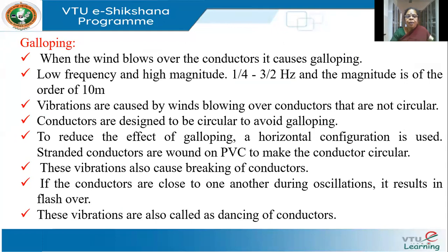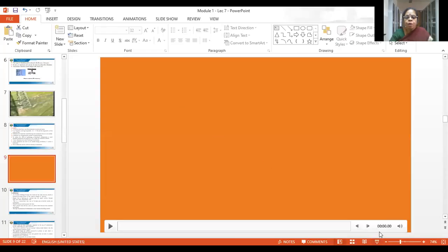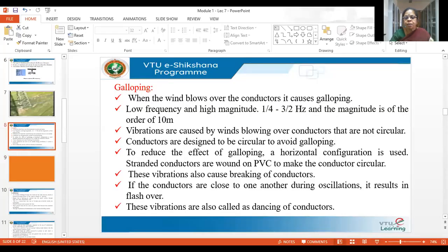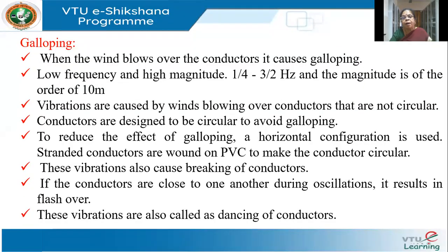The other type of vibrations are called galloping. This galloping occurs when the wind blows over the conductor. These are of low frequency and high magnitude. The frequency is very small, around 1/4 to 3/2 hertz, and the magnitude is high — around 10 meters.